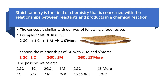Stoichiometry is the field of chemistry concerned with the relationship between reactants and products in a chemical reaction. The concept is similar to following a recipe. For example, a s'more recipe: you need two graham crackers plus one chocolate piece plus one marshmallow to form one s'more. The underlying numbers are what we call — similar to a chemical equation — coefficients.